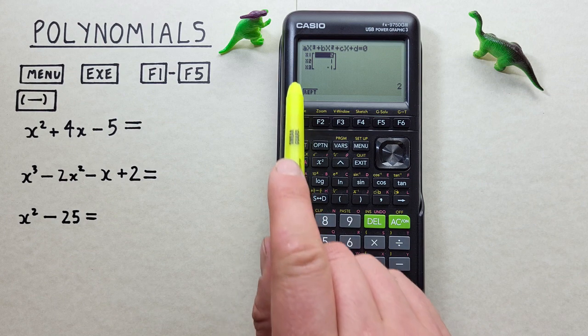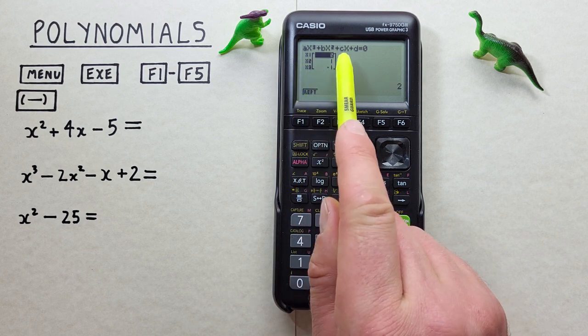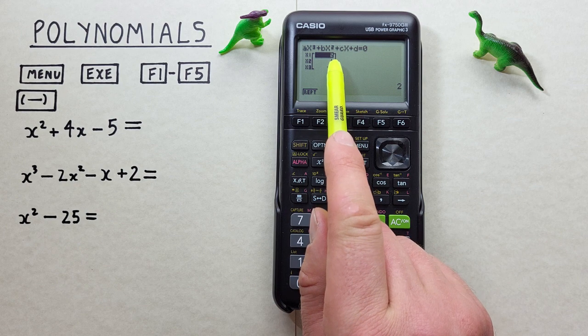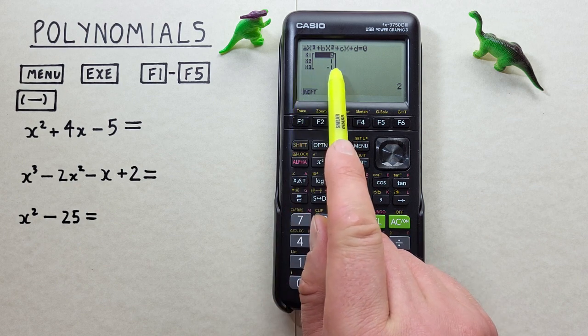And that gives us our results. So we have X equal to 2, X equal to 1, or X equal to negative 1 as a result.